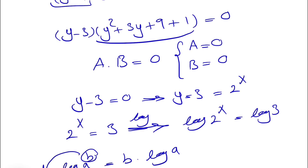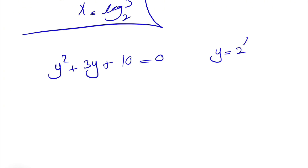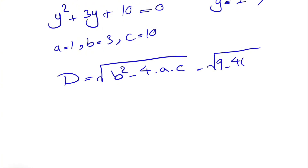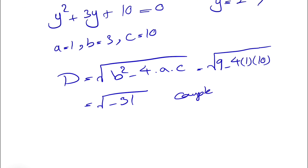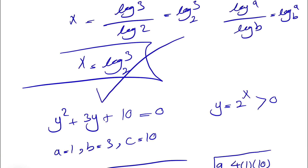Going back to the other factor, b equals 0 means y squared plus 3y plus 10 equals 0. We have a quadratic equation, but remember y equals 2 to the x which is always greater than 0. With a equals 1, b equals 3, c equals 10, the discriminant is b squared minus 4ac, which is 9 minus 40 equals negative 31. This gives complex answers, so we discard this case, leaving only one answer.